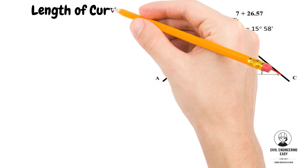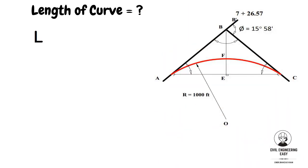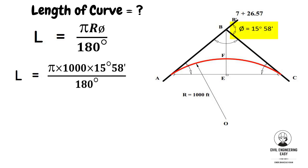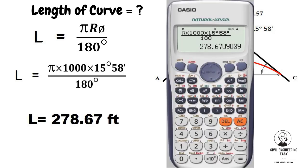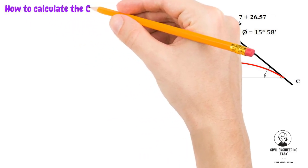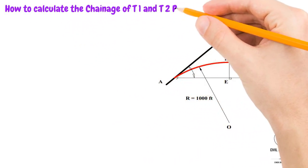Next, we find the length of curve using the relation derived previously: Length of curve = π × R × Δ / 180. Putting in the values — radius 1000 feet, deflection angle 15 degrees 58 minutes — by calculation we get the length of the curve equal to 278.67 feet.